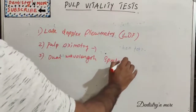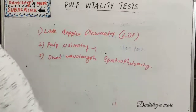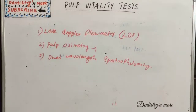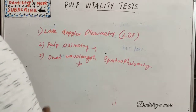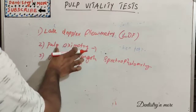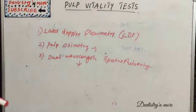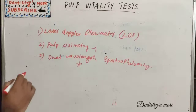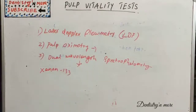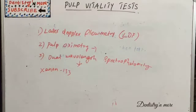Another newer test is dual wavelength spectrophotometry, which measures the oxygen level in capillaries using a light beam and provides the result on a screen. Other newer technologies include measuring the temperature of the tooth surface, trans-illumination with fiber optic light, xenon-133, gas desaturation, radiolabeled microspheres, and electromagnetic flowmetry. The conventional tests remain heat test, cold test, electric pulp testing, percussion test, and palpation test.